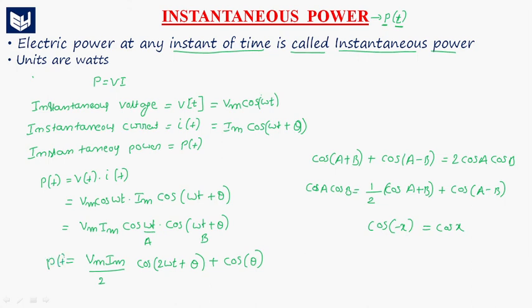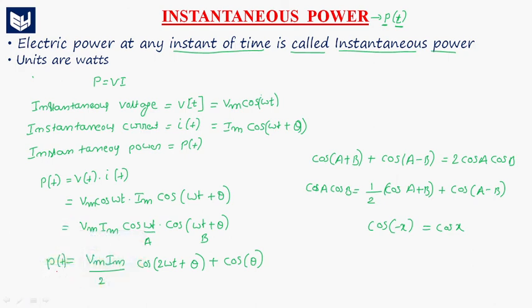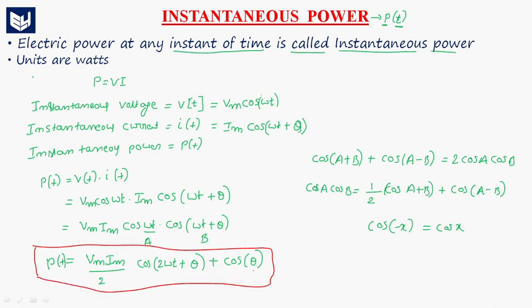So the instantaneous power P(T) = (Vm·Im / 2) × [cos(2ωT + θ) + cos θ]. This is the instantaneous power.